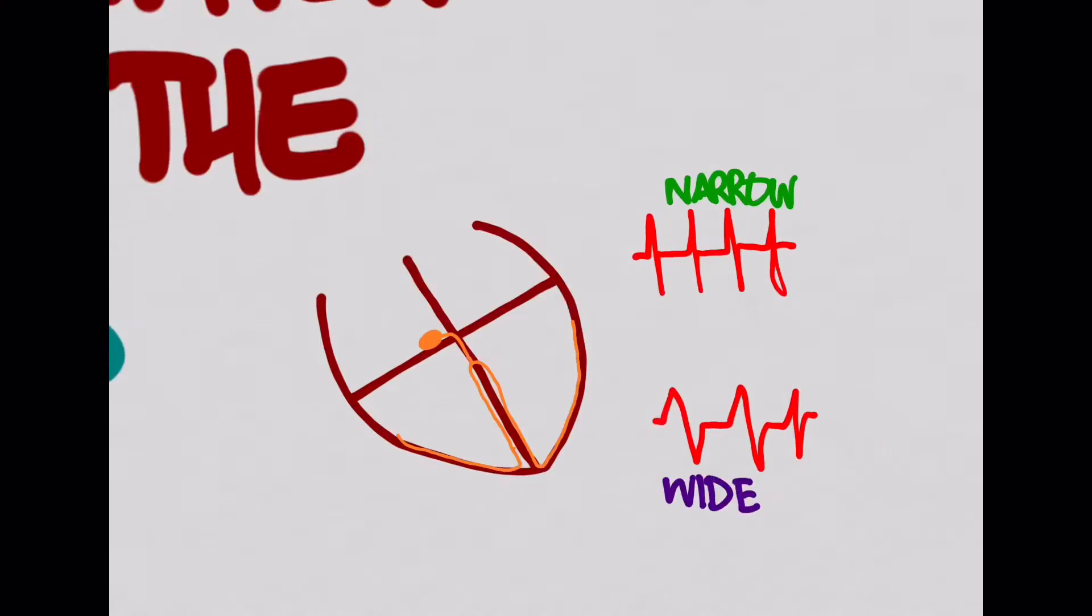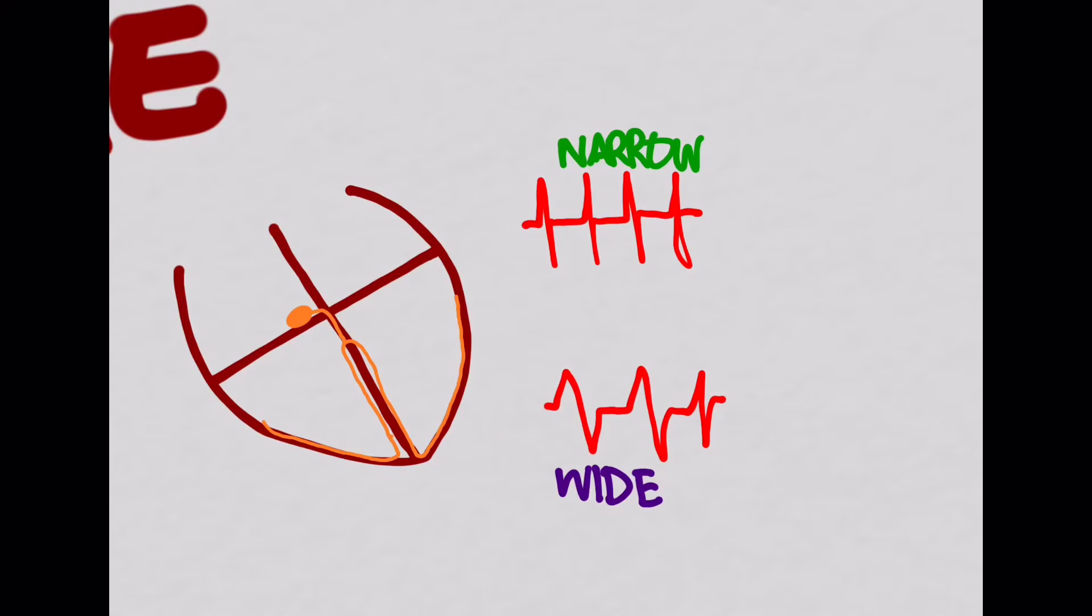The first distinction that they want you to make is whether the tachycardia is narrow or wide. Obviously, this is what a narrow one looks like with a QRS that's less than 100 to 120 milliseconds, and a wide one is greater than that. The narrow tachycardia has happened because the signal follows the His-Purkinje system and it allows the ventricle to be polarized quickly, creating that very narrow complex.